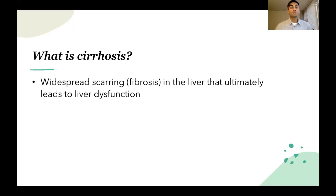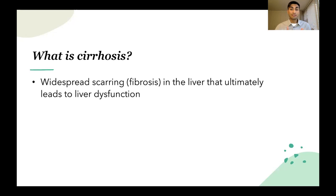So first, what is cirrhosis? Cirrhosis is widespread scarring — the medical term we use is fibrosis — that happens in the liver and ultimately leads to liver dysfunction. Because you have all this scar tissue in the liver, it disrupts the liver cells' ability to carry out their normal function.